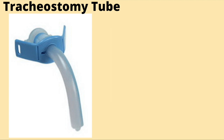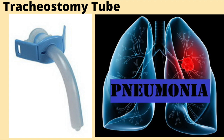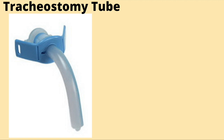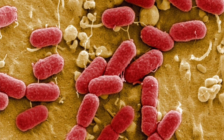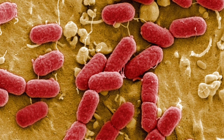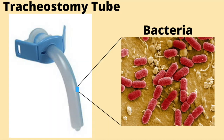When having a tracheostomy tube, a common complication which may arise is pneumonia. This occurs for several reasons. First, the tracheostomy tube is a foreign object in the airway. It is an ideal habitat for bacteria. Bacteria can attach to the tracheostomy tube, reproduce, and cause infection.